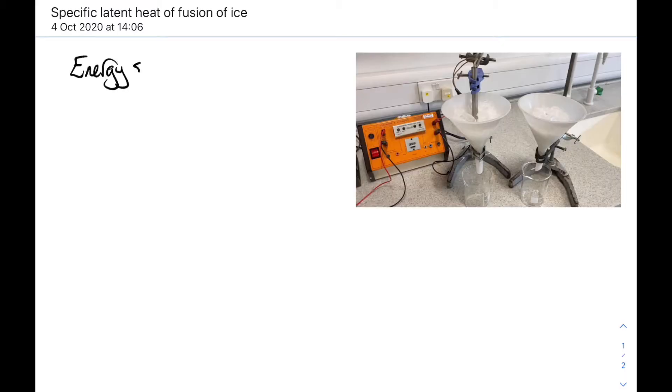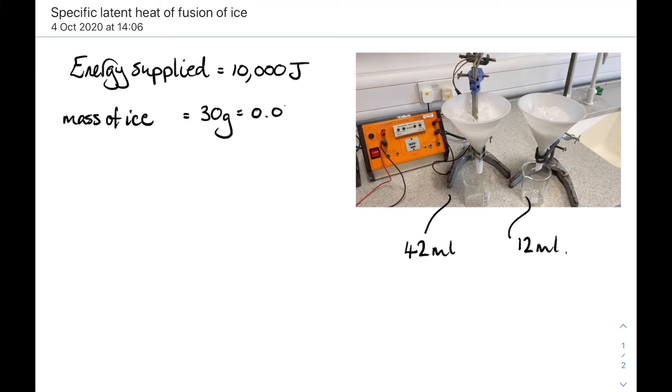Okay, let's do the maths. So the energy supplied just to one of the funnels of ice was 10,000 joules, and a total of 42 milliliters of water was produced. And in the other beaker, we got 12 milliliters, and that was produced just from the heat in the room. So the difference between the two, and in fact, the mass of the ice that was melted just by the 10,000 joules from the heater, was 30 grams, 0.03 kilograms. Bear in mind that one milliliter of water is equal to a mass of one gram.